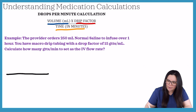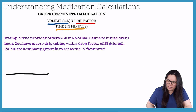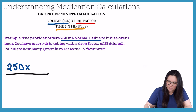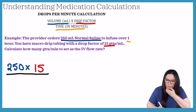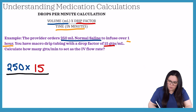Our volume in mL is 250 mL of normal saline, so we plug that in, times our drip factor of 15. We know this is given over one hour, so we do a quick conversion: 60 times 1 is 60, and we plug in 60 for our time in minutes.